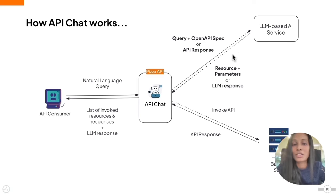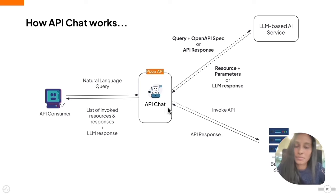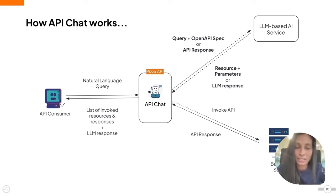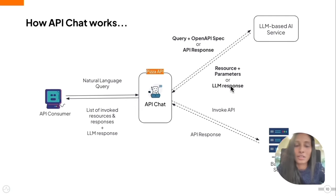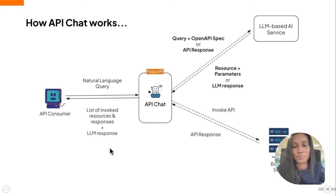If the LLM returns a resource with parameters, the API Chat will invoke that API against a backend service, which then returns the API response. We push that API response back to the consumer and also feed it back to the LLM-based AI agent to track whether more resources need to be invoked or if the task is done. If only one API invocation was involved, it tells us the task is complete and gives a summary of what it performed. The API consumer then receives the list of resources that were invoked, their responses, and the LLM's summary.